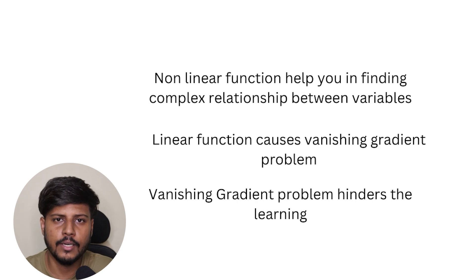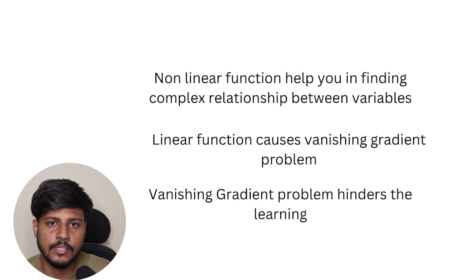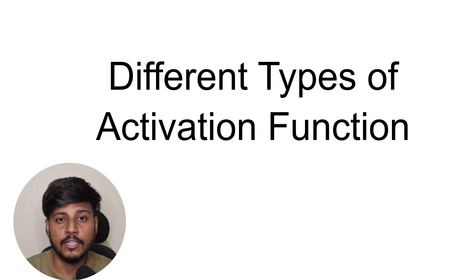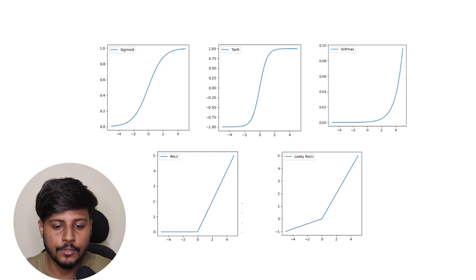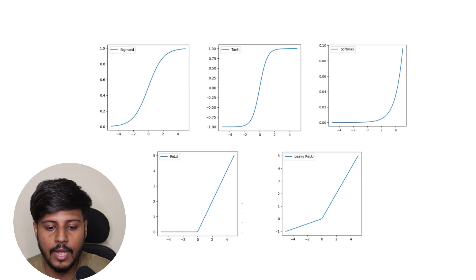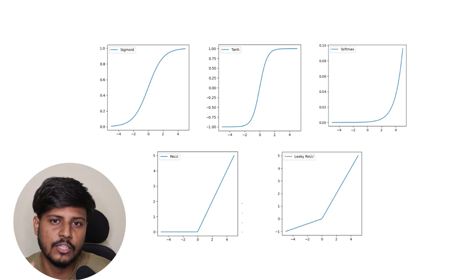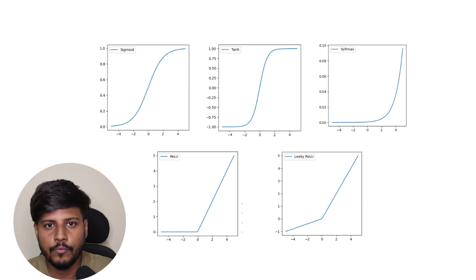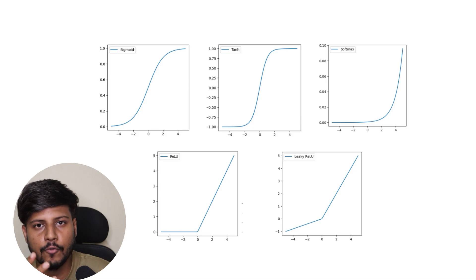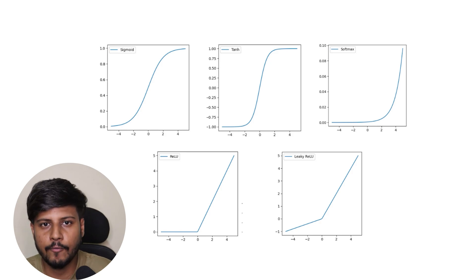There are several types of activation functions. We have the sigmoid activation function, the hyperbolic tangent (tanh) activation function, and the Rectified Linear Unit — ReLU. We also have leaky ReLU, which is a variant of ReLU. In the case of ReLU, values are between zero and one and negative values are ignored, whereas in leaky ReLU, negative values are multiplied by an alpha value rather than being ignored.